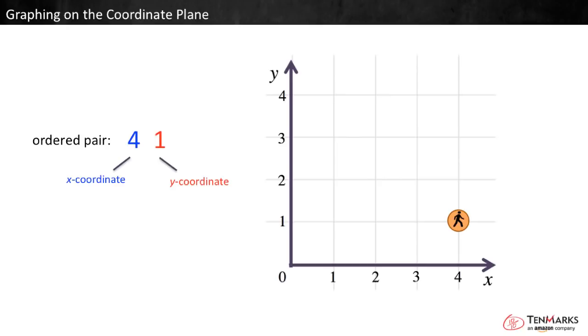So the y coordinate is one, which means it is one unit above the origin. The ordered pair for this point is (4, 1). An ordered pair is always written in parentheses. It always has a comma between the coordinates, and the x coordinate is always written first.